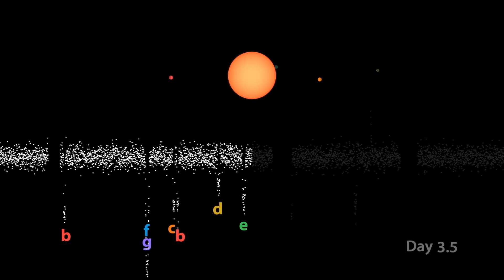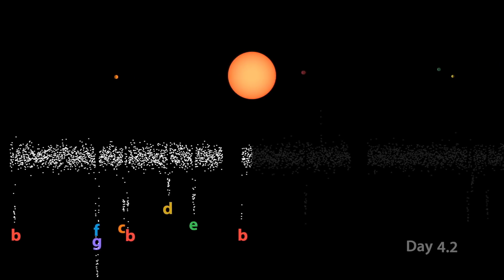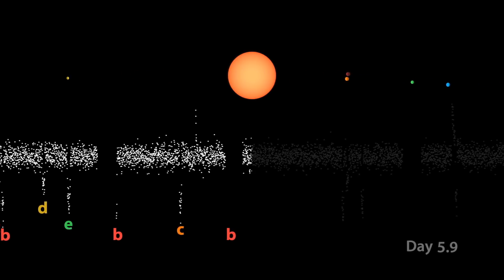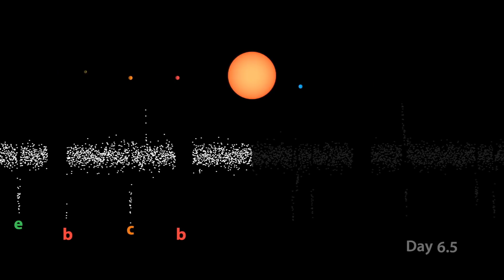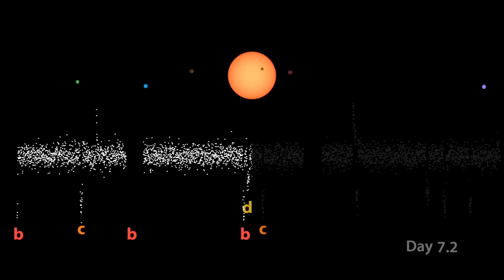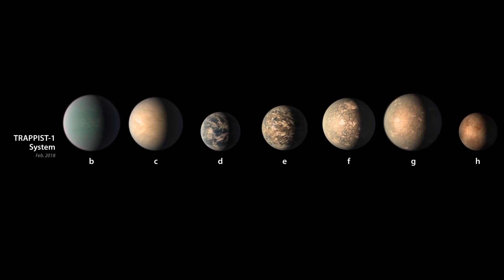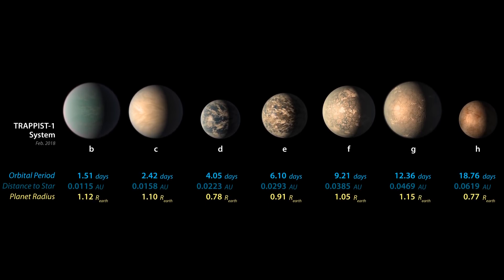Astronomers can detect planets around stars by carefully watching for tiny, repeating dips in brightness. If orbiting planets are lined up just right, when they pass in front of the star, they block a tiny bit of its light. The amount of dimming gives us the planets' sizes, and the timing tells us about their orbits.